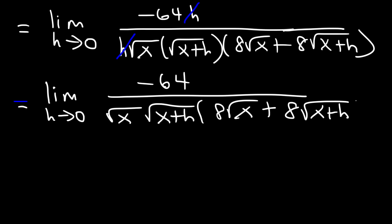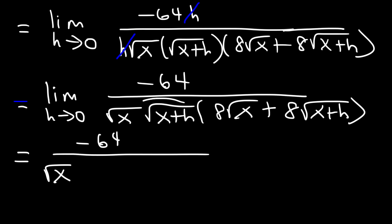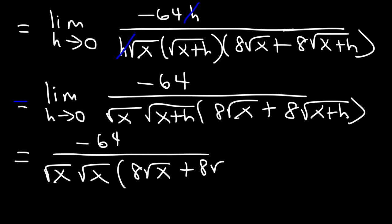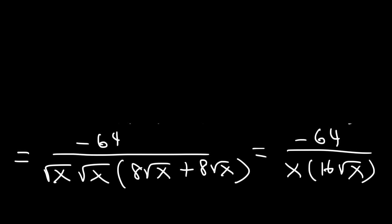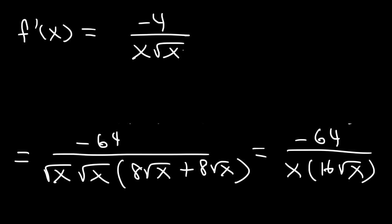Now I'm going to replace h with 0, so I'm no longer going to write the limit expression. So it's negative 64. Then we have square root x — and square root of x plus 0 is also square root x — and then 8 times the square root of x, and we replace h with 0 there, so that's also 8 square root x. Now the square root of x times the square root of x is x. And 8 plus 8 is 16. We can divide negative 64 by 16 to get negative 4, so the answer is negative 4 over x square root of x. You can also write x square root x as x to the 3 halves.